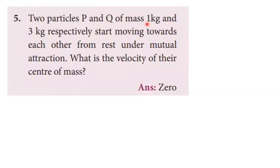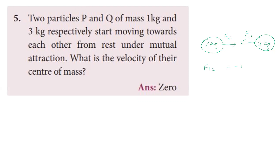Two particles P and Q of mass 1 kg and 3 kg respectively start moving towards each other from rest under mutual attraction. What is the velocity of their center of mass? Since action and reaction are equal and opposite, the total force on the center of mass equals zero. So the acceleration of the center of mass is zero, meaning the velocity of the center of mass does not change.